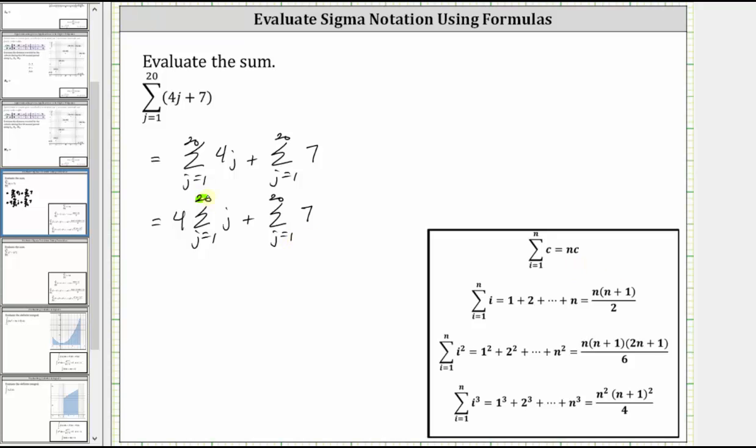Notice for both of our sums, n is equal to 20. So four times the sum from j equals one to 20 of j is equal to four times the product of n and n plus one divided by two, which is 20 times the quantity 20 plus one divided by two.